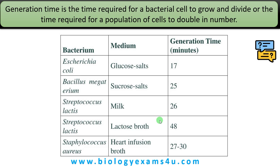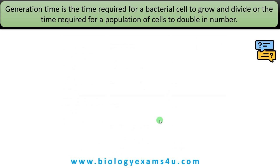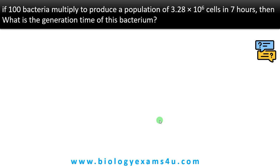Microbiologists use generation time to understand the growth duration of different strains of bacteria. Let us work out a problem to understand how to calculate generation time. If 100 bacteria multiply to produce a population of 3.28 × 10⁶ cells in 7 hours, then what is the generation time of this bacteria?